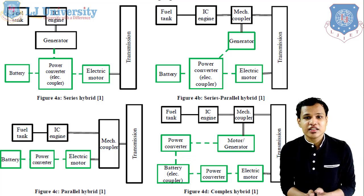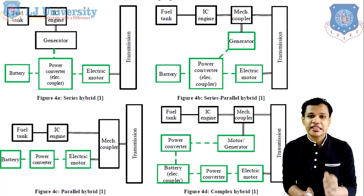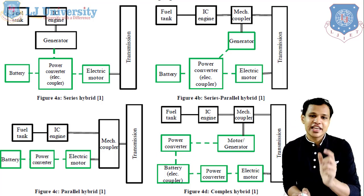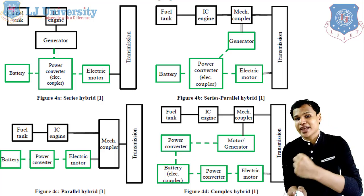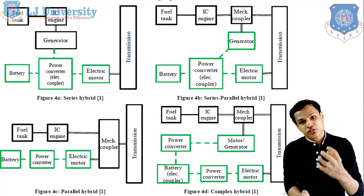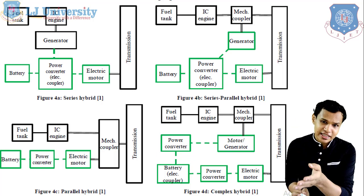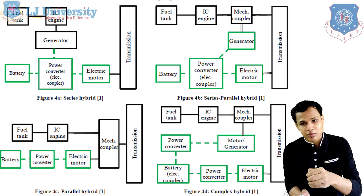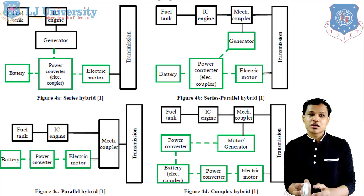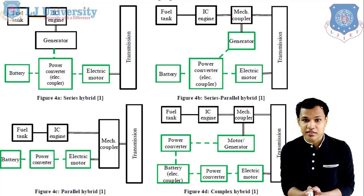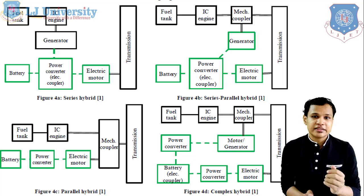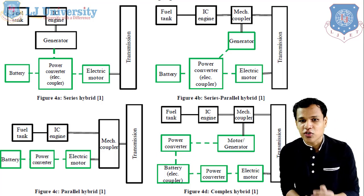The third configuration, figure 4B, is the series-parallel hybrid system. As the name suggests, it is the combination of the series and parallel system. It can be used for both purposes — the IC engine can directly supply to the transmission, and it can also supply power to the battery, the electric motor, and for charging as well according to the requirement. But the number of components and the arrangement of this system is much more complicated, and because of the higher number of components this system is generally not preferred for our vehicles.